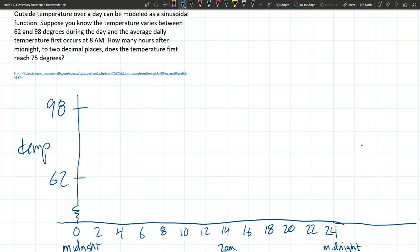Let's start to dig into more of this information. 8 AM, average daily temperature first occurs at 8 AM. So 8 AM is average. So what's average? Well, average is directly between these two numbers. Let's do a fast computation: add and divide by 2. So that is 160 over 2, which is 80. Very nice number.